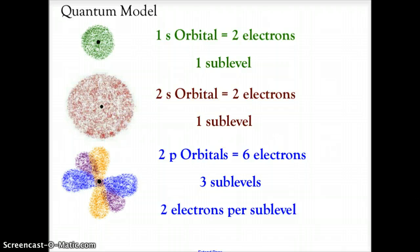That orbital has 1 sublevel that holds 2 electrons. Then there's the 2s orbital. Both of these orbitals, all the s orbitals, are spherical in shape. Remembering that the atom is 3-dimensional, it's not a flat atom. It's actually a 3-dimensional atom. Therefore, this s orbital is actually a sphere. The 2s orbital also has 1 sublevel and holds 2 electrons.